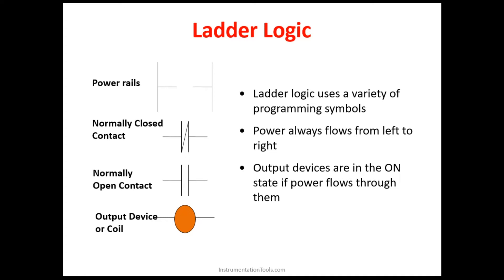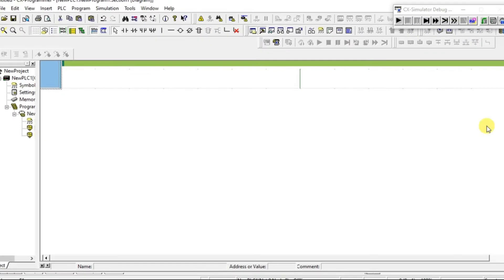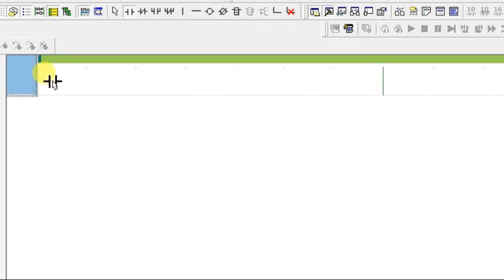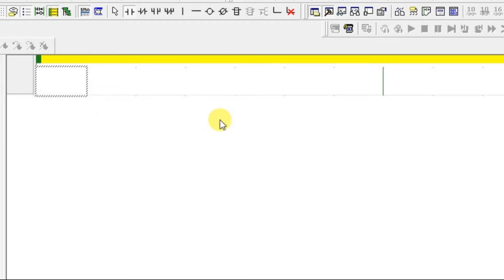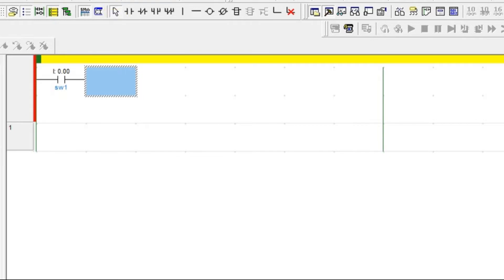NO contact, also called Normally Open contact, is one of the most important instructions in ladder logic. Throughout any project in ladder logic, it is impossible to write logic without NO contact. Let us see about this NO contact in CX Programmer. You can find the NO instruction here — I will name this instruction as Switch 1.